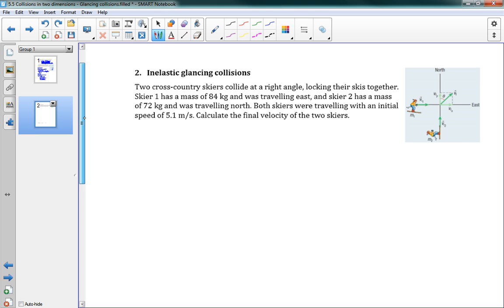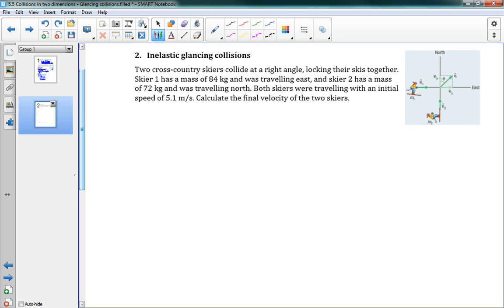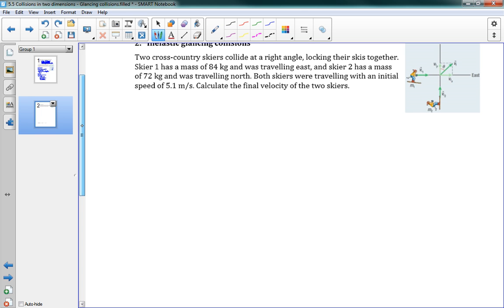Okay, one other problem here. Inelastic glancing collision. So, this is an inelastic collision. These two skiers are going to end up moving together at the end. So, it says two cross-country skiers collide at a right angle, locking their skis together. Skier one has a mass of 84 kilograms and was traveling east. And skier two has a mass of 72 kilograms and was traveling north. They're both traveling with an initial speed of 5.1 meters per second. We want to calculate their final velocity.